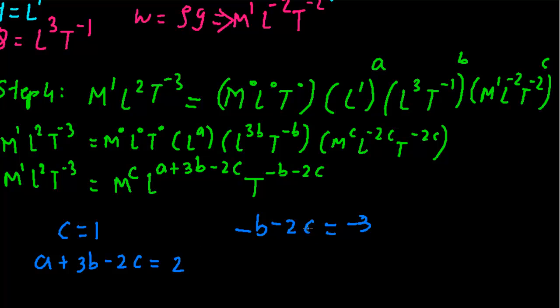C equal to 1. Just put the value of c over here. If c equals 1, then minus b minus 2 equals minus 3. Minus b is equal to minus 1, so b will be equal to 1. Once you have b and c as 1, you get 3 minus 2 is 1, so a plus 1 is 2, and a equals 1.